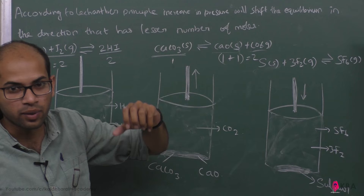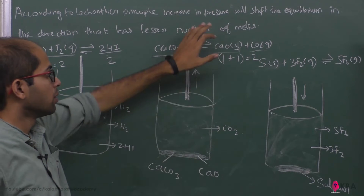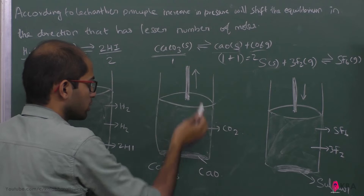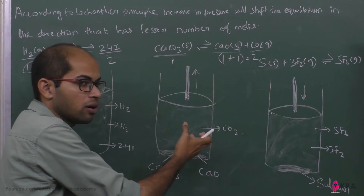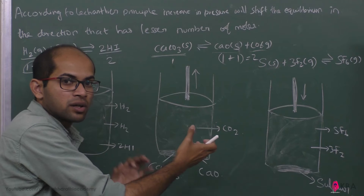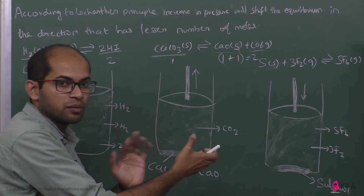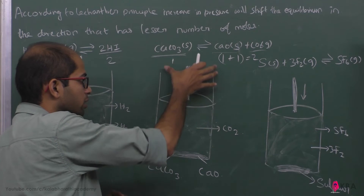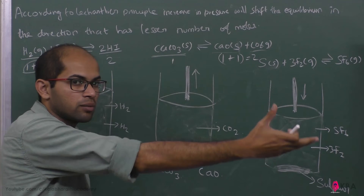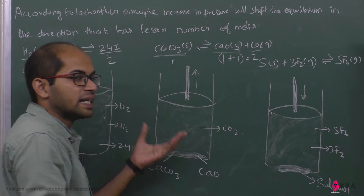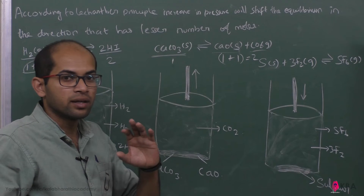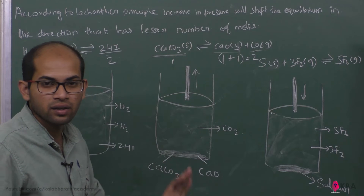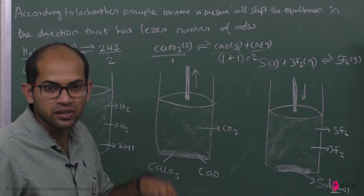So we need to increase the volume. When you increase the volume — for example, by increasing the piston — pressure decreases, as they are inversely proportional. Pressure decrease and volume increase shift the equilibrium toward the product side. Therefore, increasing the volume increases the yield of the product in this second case.